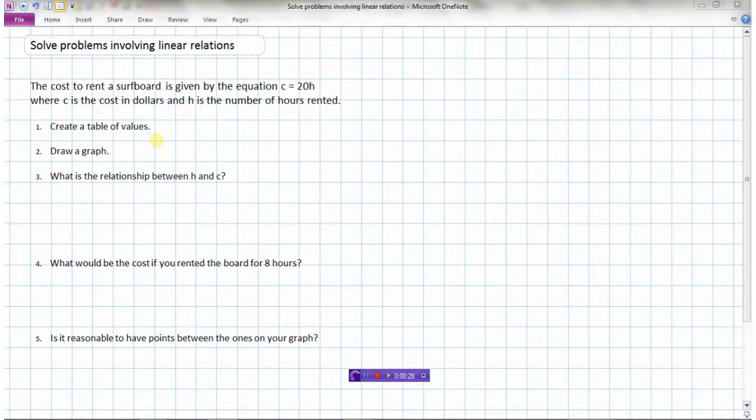So we have to create a table of values, draw the graph, and then we're going to answer some questions from our table of values or our graph. So I'm going to go back here to the equation. Cost is equal to 20 times H. So my two variables are going to be H and C. H is like my X value and C is like my Y value. So we'll need to generate our own values for H. Let's assume we rent it for zero hours, or one hour, or two hours, or three hours, let's even go up to five.